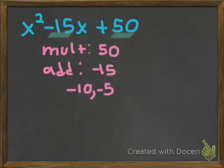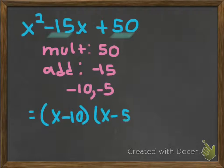Which means our factored version, once we've factored this now, is x minus 10, x minus 5. So that's our factored version right here.